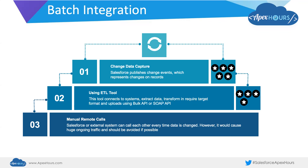If you have no other options, systems can call each other — Salesforce can call external systems via Apex using SOAP or HTTP APIs, and external systems can connect to Salesforce in multiple ways. But any change in any system triggering custom integration causes huge ongoing traffic. In practice, you should avoid this kind of spaghetti integration — it will not be manageable in the long term. I consider this sub-optimal integration and you should avoid it.